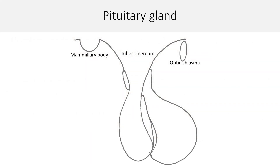Pituitary gland or hypophysis cerebri is located in the pituitary fossa. It is attached to the tuber cinereum on the base of the brain through its infundibular stalk. Based on the source of development, pituitary gland is made up of two major parts: the neurohypophysis, developing as the downgrowth from diencephalon, and adenohypophysis, an evagination of the oropharynx called Rathke's pouch.